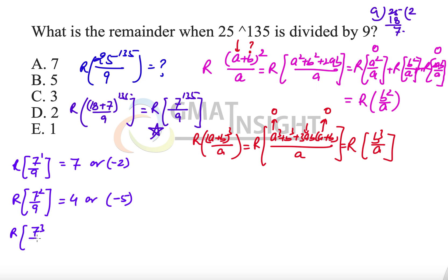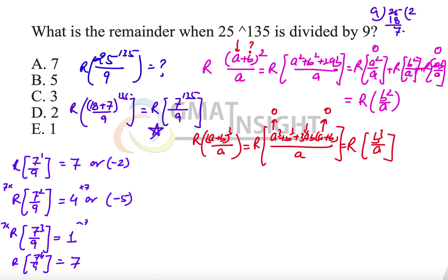For 7³, instead of computing 343 directly, we multiply the previous remainder by 7: 7 × 4 = 28, and 28 divided by 9 leaves remainder 1. When we get remainder 1, repetition must begin. Multiplying both sides by 7, the remainder when 7⁴ is divided by 9 is again 7 — the same as the first step. So the cyclicity of the remainders is 3: after every 3 powers, the remainders repeat as 7, 4, 1.